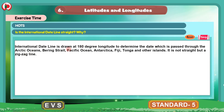So the international date line is not straight. It is a zig-zag line drawn at 180 degree longitude to determine the date, passing through the Arctic Ocean, Bering Strait, Pacific Ocean, Antarctica, Fiji, Tonga, and other islands. This is about the HOT section. Now we will move to the next section.